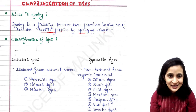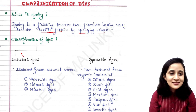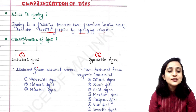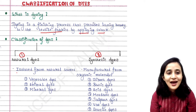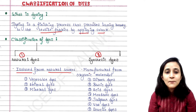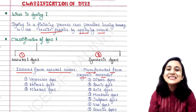We will classify the dyes. They are of two types mainly: the first one is the natural dye and the second one is the synthetic dye. Natural dyes are isolated from natural sources, while synthetic dyes are manufactured from organic molecules — they are created synthetically or artificially.